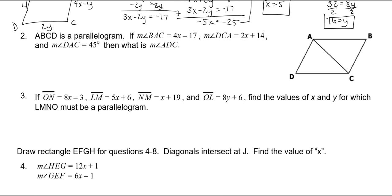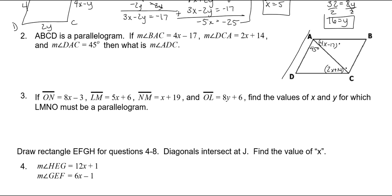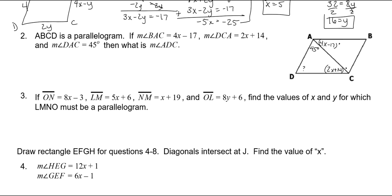ABCD is a parallelogram. The measure of BAC is 4X minus 17. The measure of DCA is 2X plus 14. The measure of DAC is 45 degrees. Then what is the measure of ADC? So first we need to figure out what X is, then we can use just this triangle to figure out that angle, because all the angles of a triangle add to be 180.